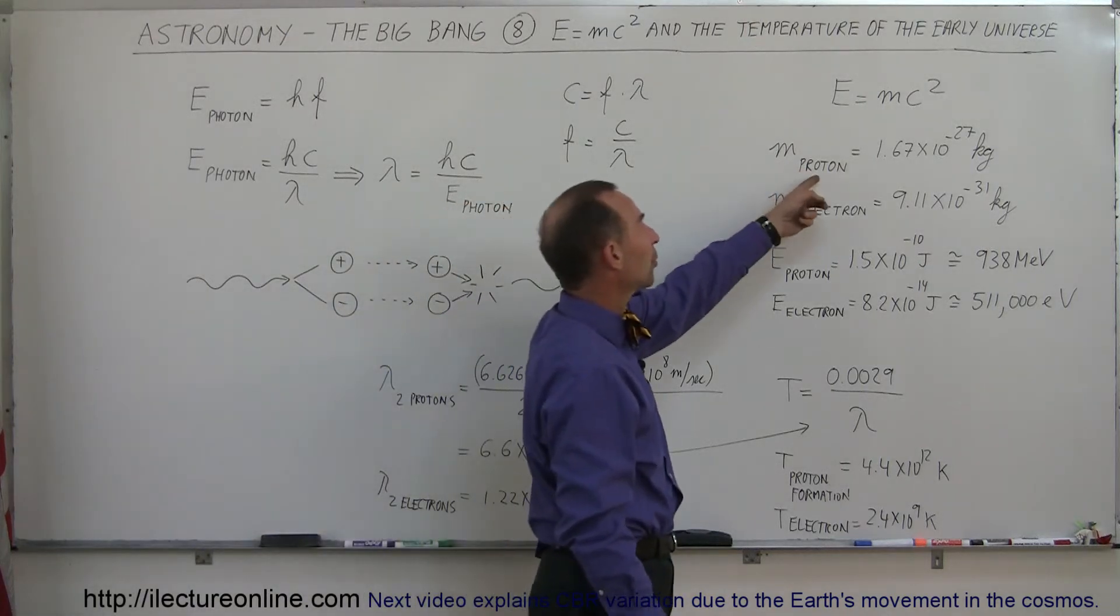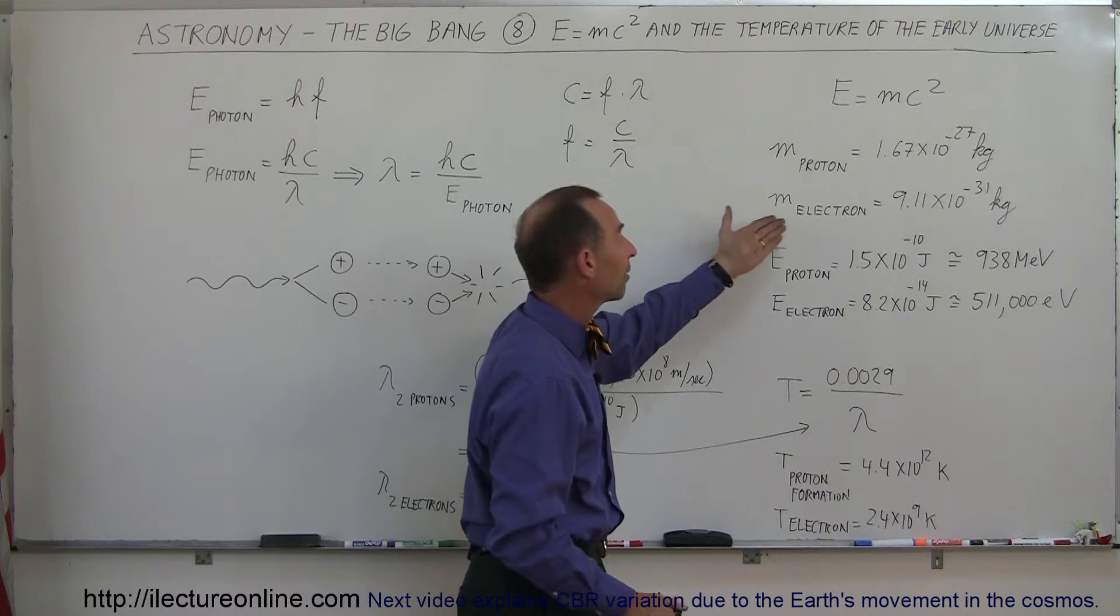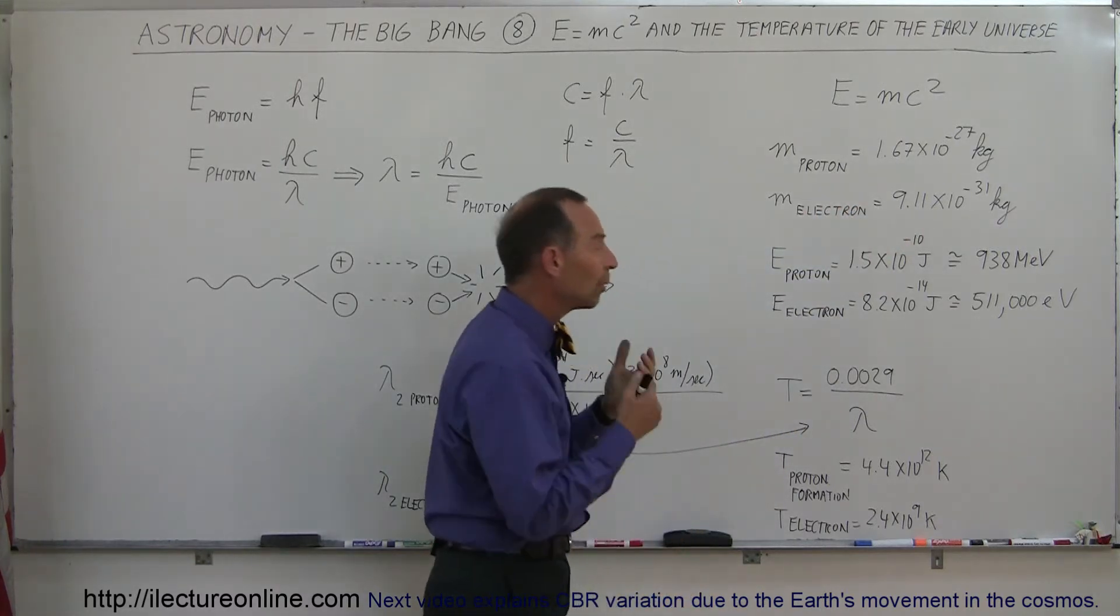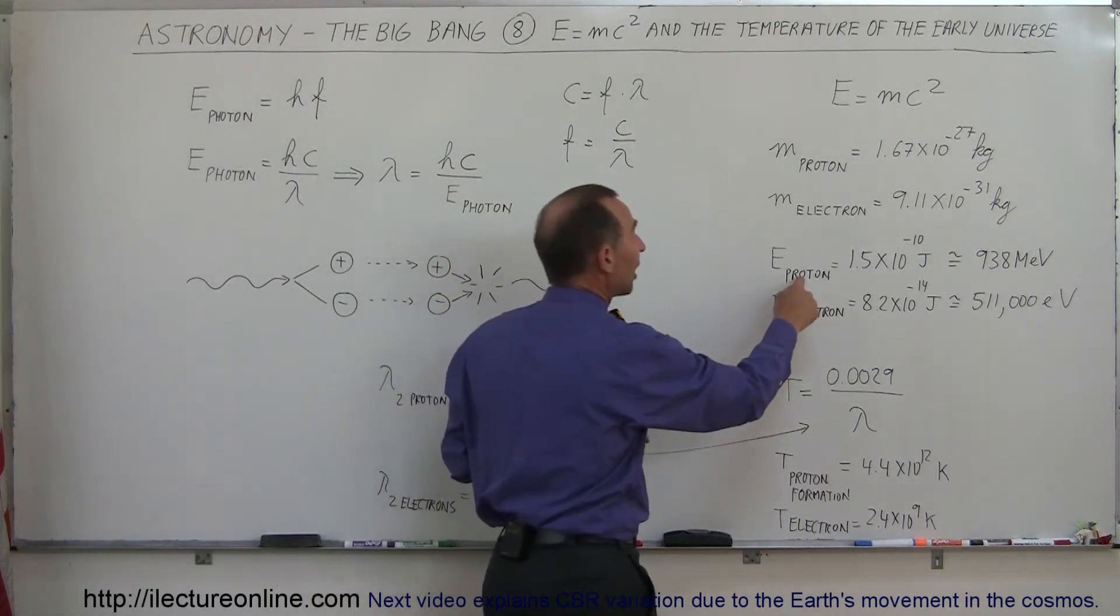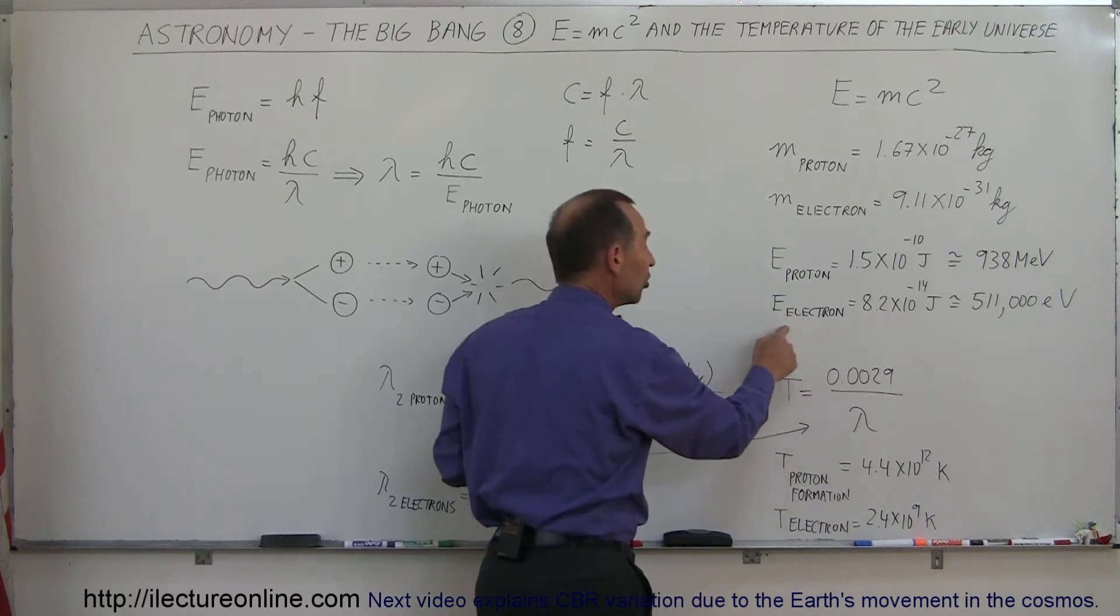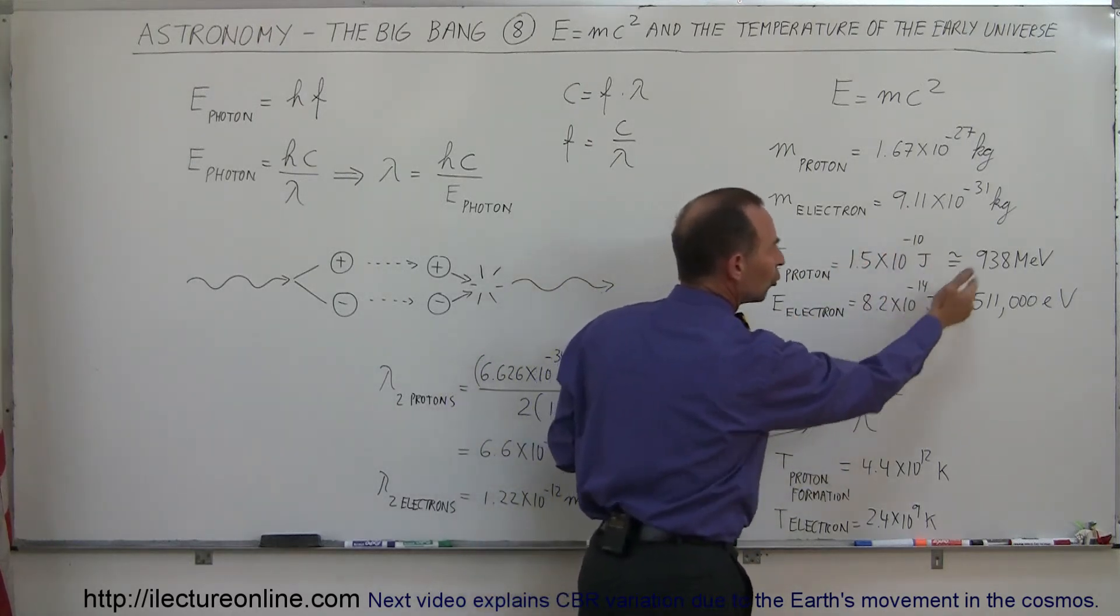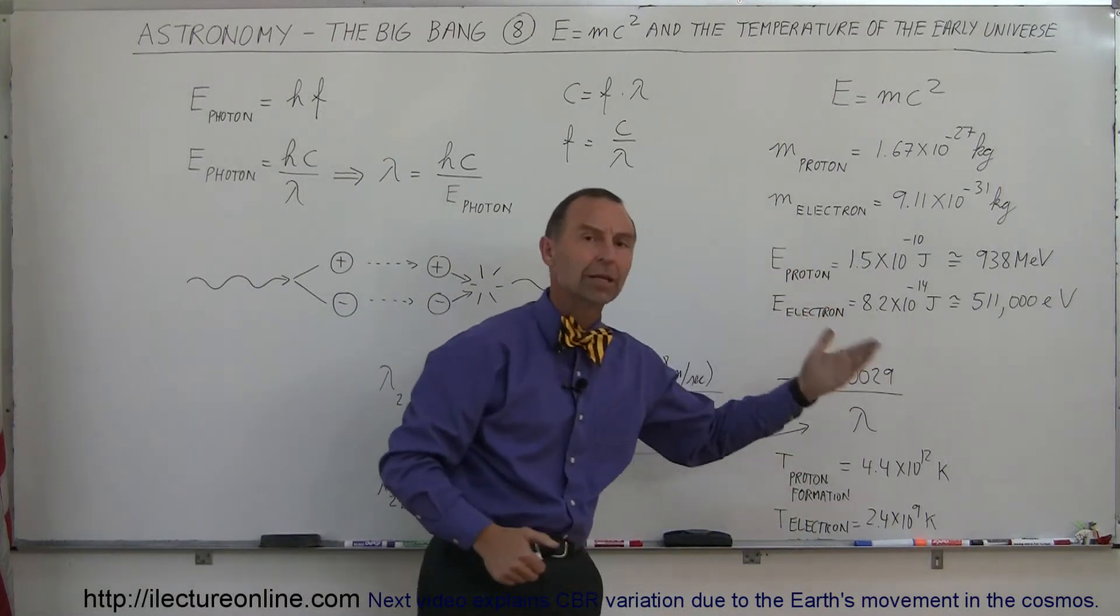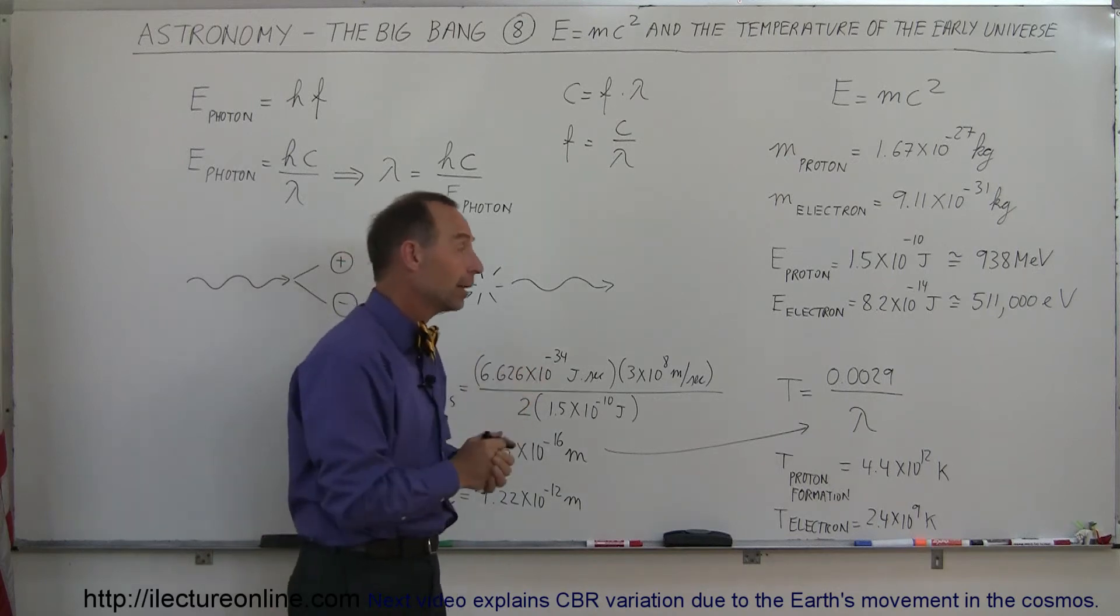For example, we know that the mass of a proton is 1.67 times 10 to the minus 27 kilograms, and the mass of an electron is 9.11 times 10 to the minus 31 kilograms. So we can actually calculate using the equation E equals MC squared, how much energy it takes to make one proton and how much energy it takes to make one electron. We can express that in terms of joules or in terms of electron volts, like 938 million electron volts or 511,000 electron volts to make an electron.